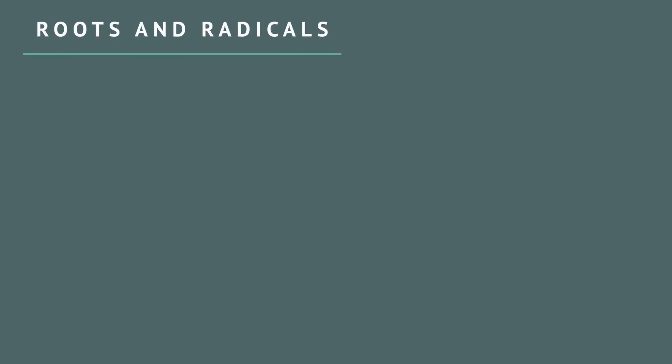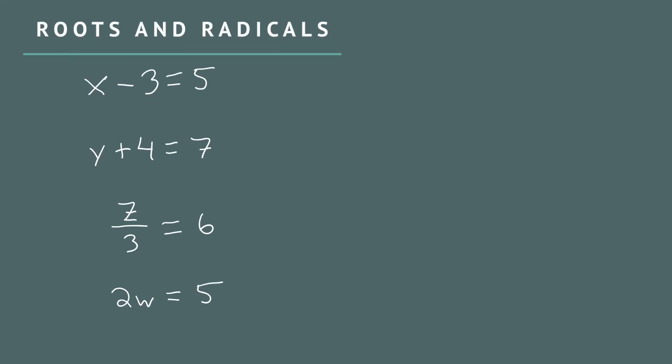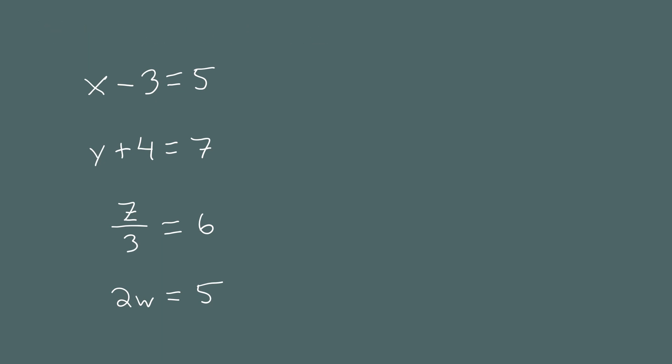When you first learn how to solve basic equations, you learn that every operation has an opposite. For example, to solve x minus 3 equals 5, you want to change both sides to get x by itself. And the operation you use to do that is addition.